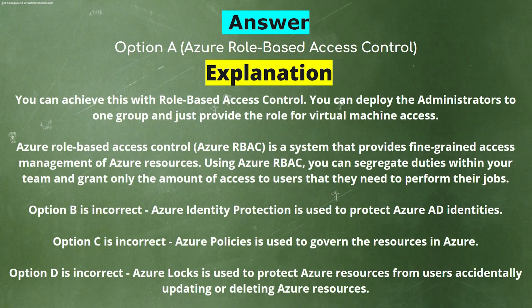Explanation. You can achieve this with Role Based Access Control — deploy the administrator to one group and just provide the role for virtual machine access. Azure Role Based Access Control is a system that provides fine-grained access management of Azure resources. Using Azure RBAC, you can segregate duties within your team and grant only the amount of access to users that they need to perform their jobs. Option B is incorrect — Azure Identity Protection is used to protect Azure AD identities. Option C is incorrect — Azure Policies is used to govern resources in Azure. Option D is incorrect — Azure Locks is used to protect Azure resources from users accidentally updating or deleting them.